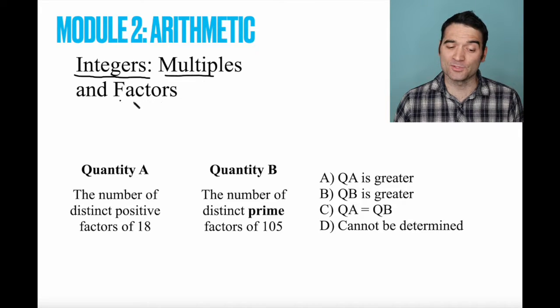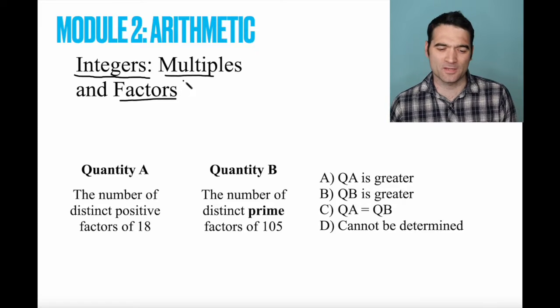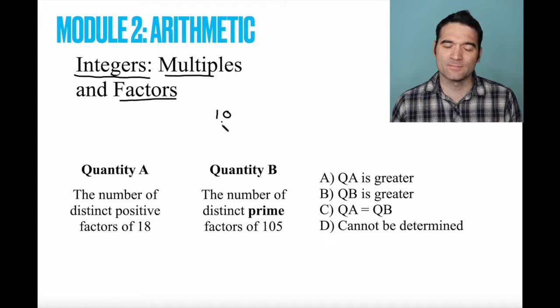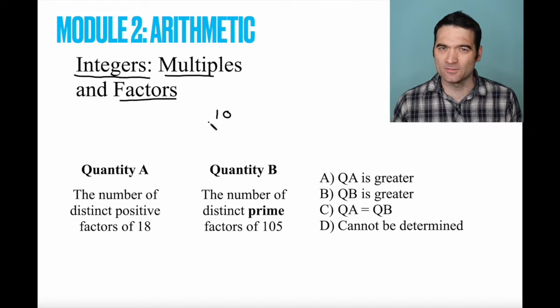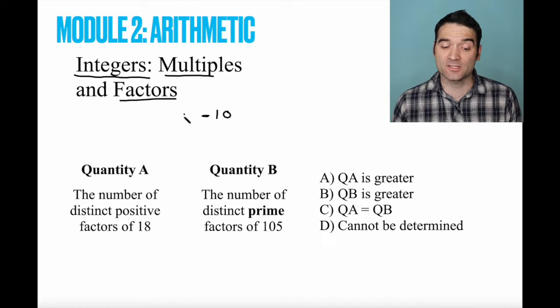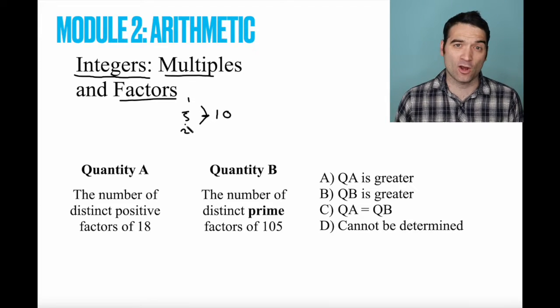Then we move on to multiples and factors. The easier way to understand these is usually with an example. So let me give you one here. Let's take the number 10. Can you give me a factor of 10? Well, a factor is anything that divides evenly into 10. So, for instance, 5 would be a factor of 10, 2 would be a factor of 10, 1 would be a factor of 10, and on and on.